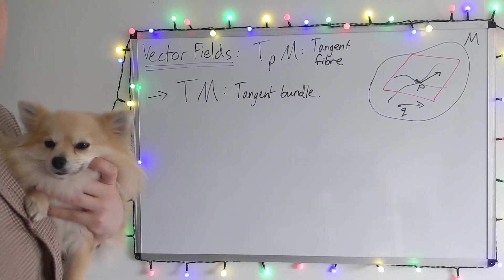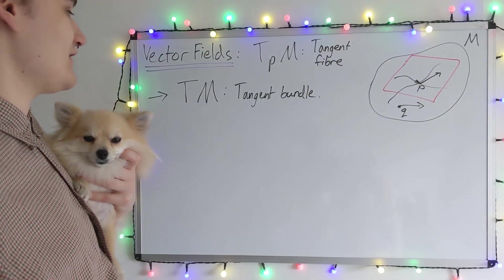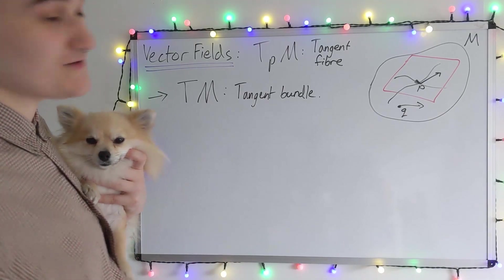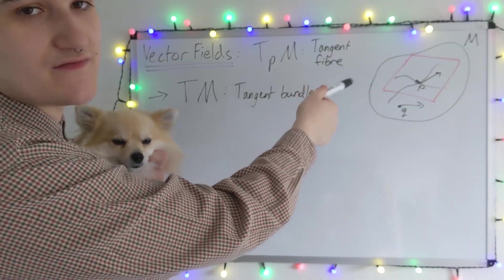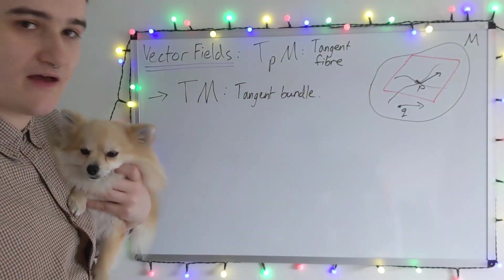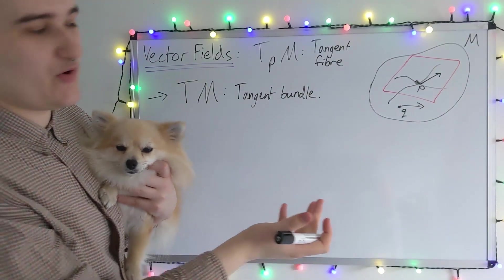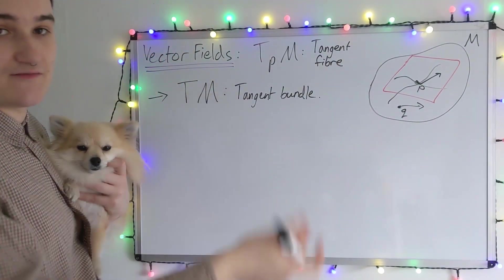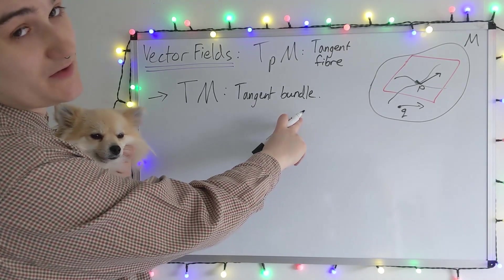This is terminology to do with fiber bundles, which is something we're going to eventually come to talk about in future videos. But for now, I'm just going to speak loosely. Essentially, the tangent bundle is the collection of all the individual tangent fibers. And each tangent fiber is essentially the tangent space at each point. The collection of all the tangent spaces over the entire manifold defines the tangent bundle.